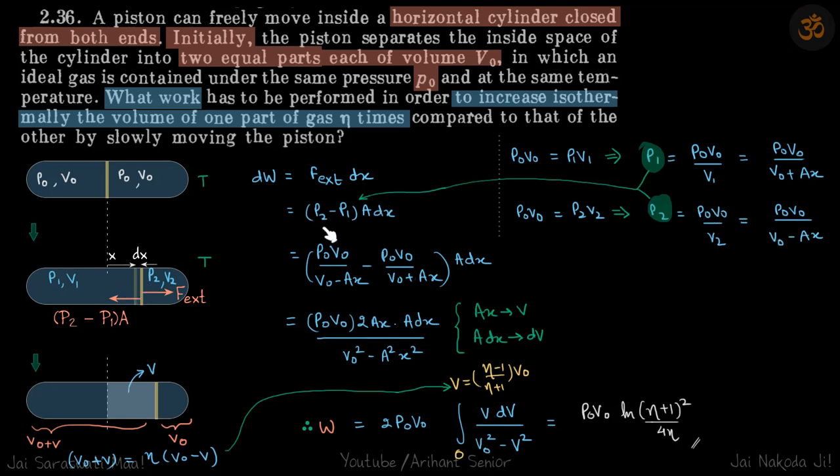So we'll put the values of P2 and P1. We'll get this equation. So now we get dW in terms of X.